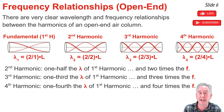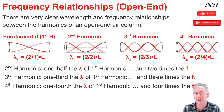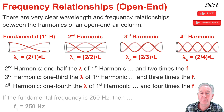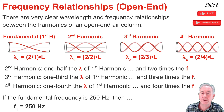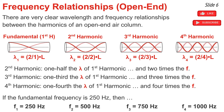In general, the frequency of the nth harmonic is n times the frequency of the first harmonic, where n is the harmonic number 2, 3, 4, etc. For instance, if the first harmonic frequency is 250 hertz, then the second, third, and fourth harmonics are two times, three times, and four times bigger than 250 hertz, giving us 500 hertz, 750 hertz, and 1000 hertz.